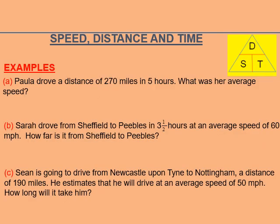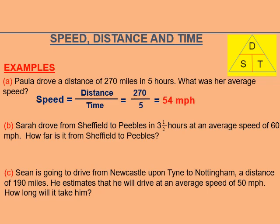Here are some examples. Question A: Paula drove a distance of 270 miles in 5 hours. What was her average speed? So which formula do we need? Speed is equal to distance upon time. We write that down, and then the distance is 170 divided by 5. Miles and hours are corresponding units, so you can use them and divide.